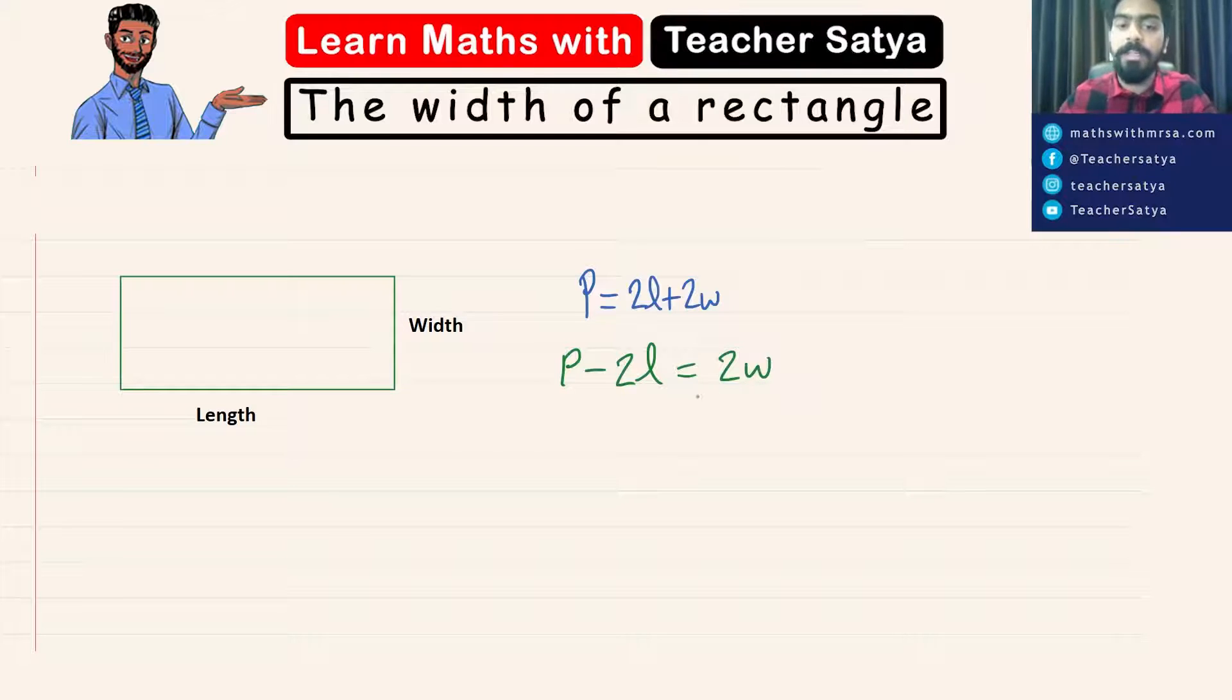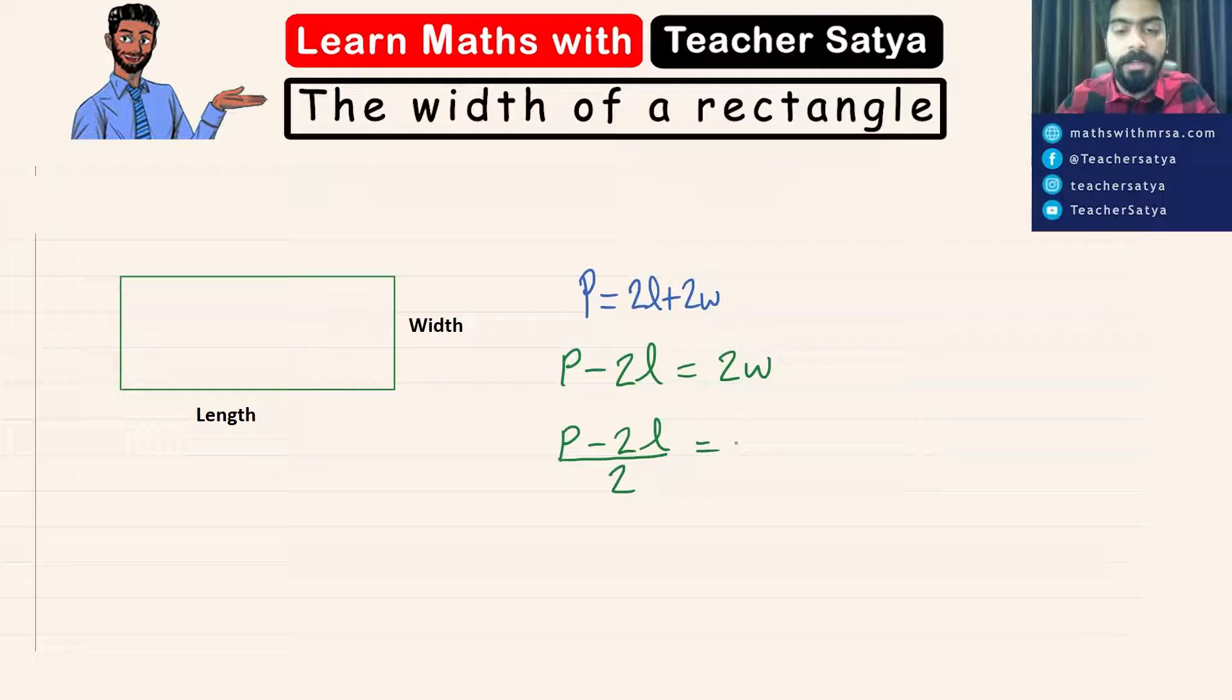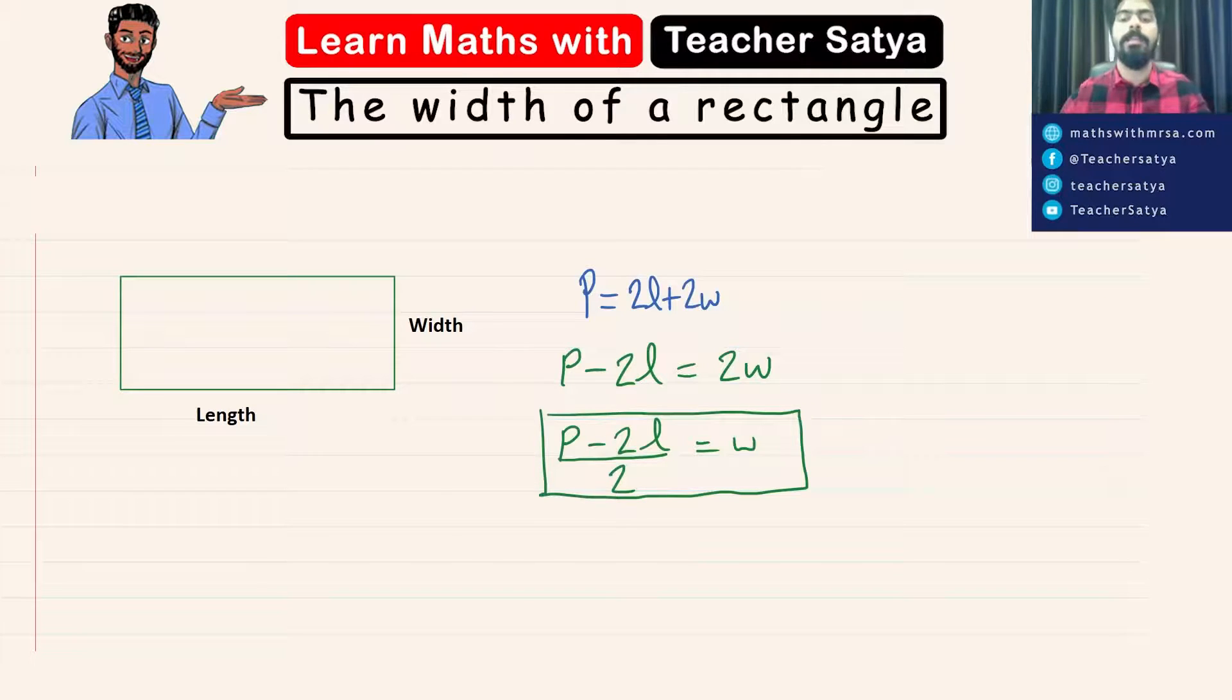And since we are solving for the width, I'm going to transpose this width to the other side. So P minus 2L divided by 2 is equal to W. It is as simple as that. If you use this formula, we can easily find the width of a rectangle.